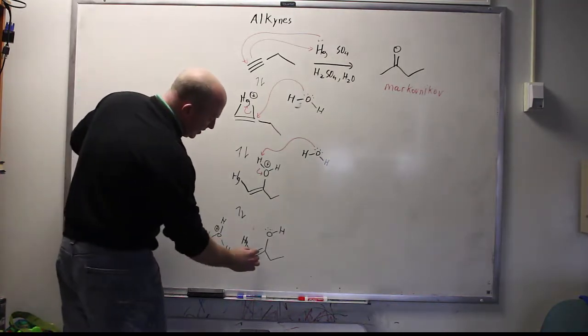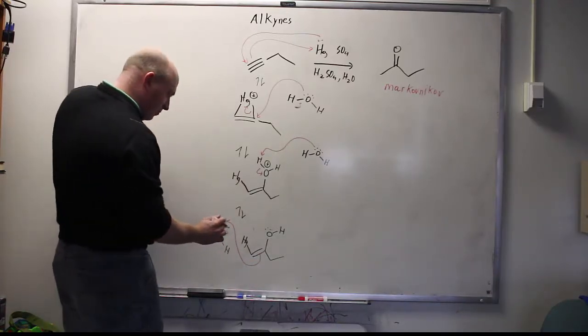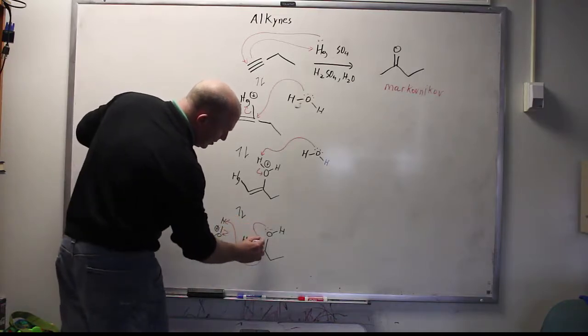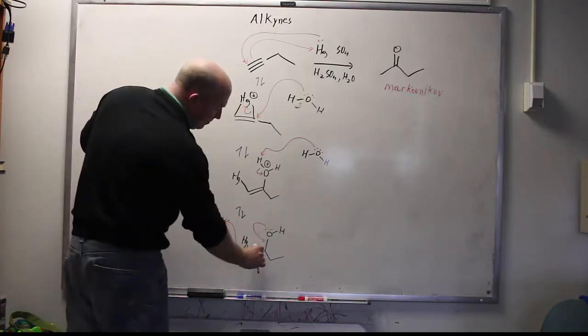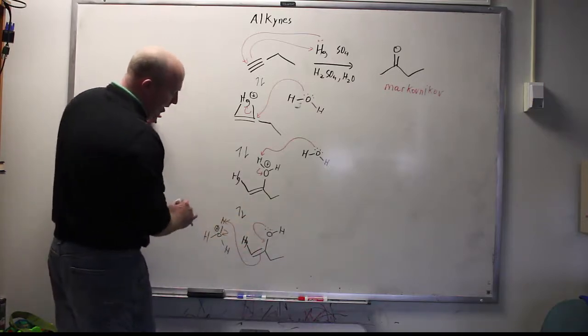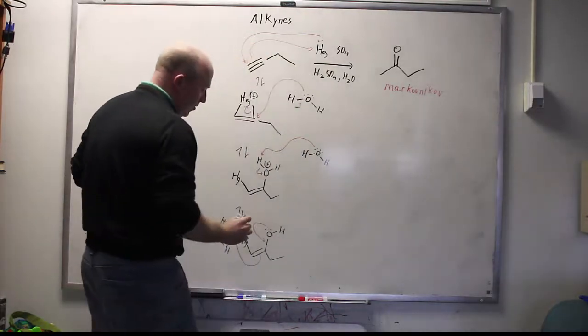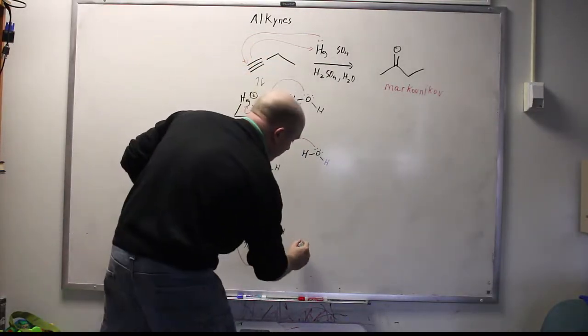This mercury enol species can in fact abstract a proton using the double bond to do so and when it does that what will happen is that the oxygen will kick down at the same time. This double bond has a fair amount of electron density because of the nearby alcohol so what we're doing here is essentially a keto-enol tautomerization but one that leads to a ketone with a mercury bound.